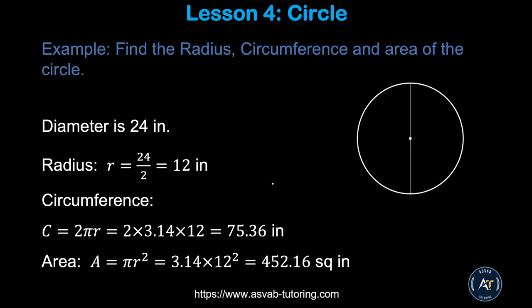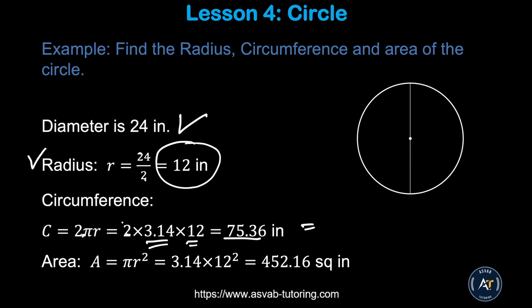Here is a circle with diameter = 24 inches. The radius is 24 ÷ 2 = 12 inches. The circumference = 2 × 3.14 × 12 = 75.36 inches — or expressed in terms of pi, that is 24π. Depending on the answer format in the actual test, you may need to present it either way.